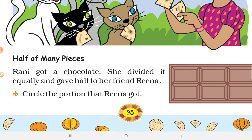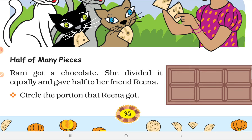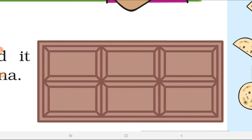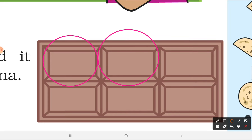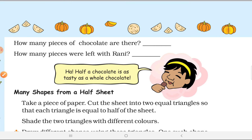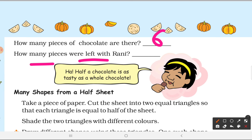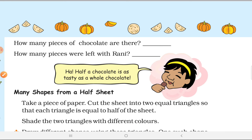Now, half of many pieces. Rani got a chocolate. She divided it equally and gave half to her friend Rina. How many pieces does the chocolate have? There are 6 pieces. So half means 3 pieces — Rina gets 3 pieces and Rani keeps 3. These 3 parts on top represent Rina's share. Half a chocolate is as tasty as the whole chocolate — share it!